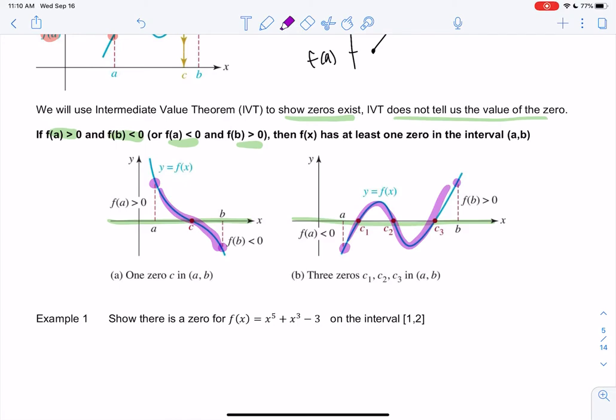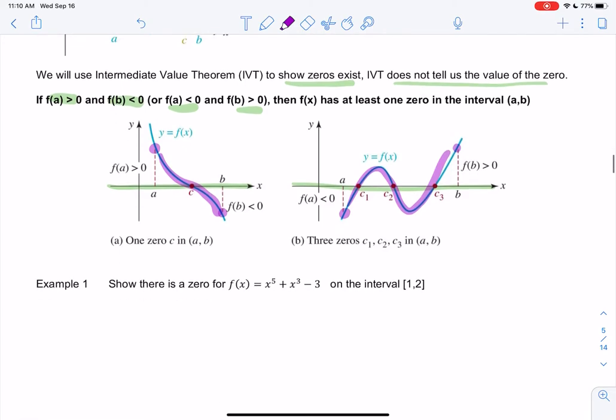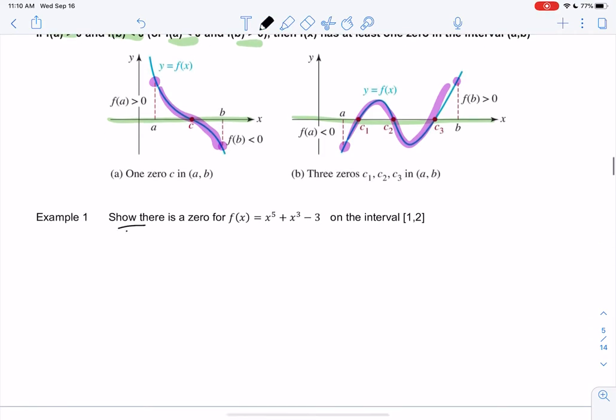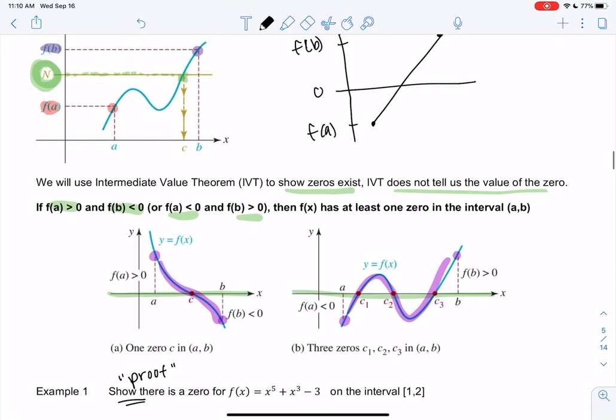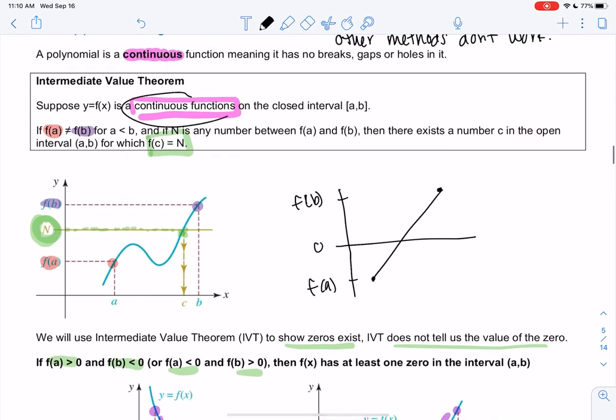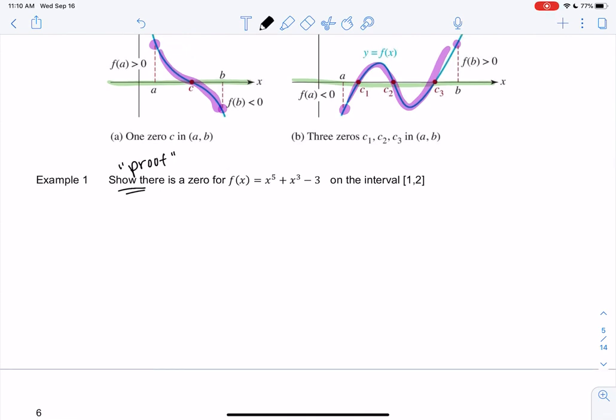So let's see how this works. We're going to do things in a little more mathy proof. So we're showing there's a zero—we're not finding a zero. So showing is almost like a proof. There's kind of two rules for the theorem, one that we often overlook, is that the function is continuous. So is this function continuous? We have f(x) = x^5 + x^3 - 3, and so yes, it's continuous.